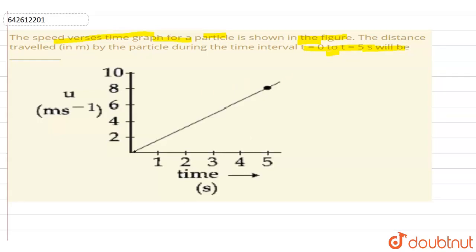we can see that the velocity is increasing at a constant rate. Since the velocity time graph is a straight line, we can say that it is moving with a constant acceleration.